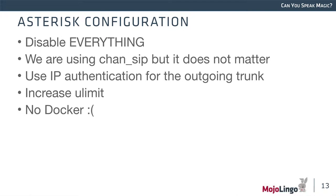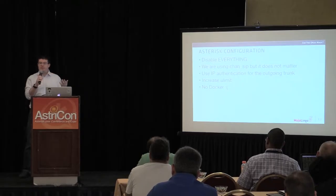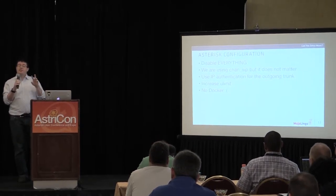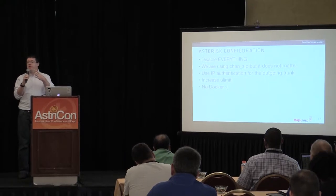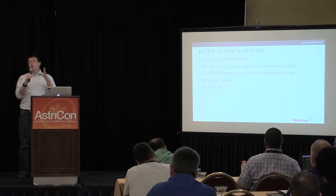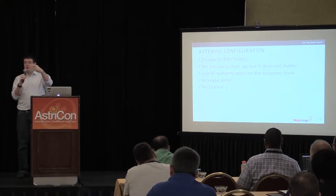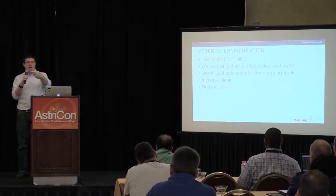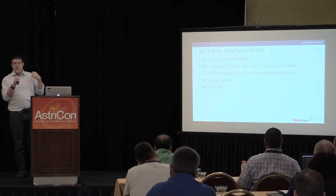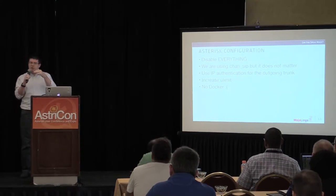Asterisk configuration: in this case we disabled everything — literally only chan_sip, AMI, and things that cannot be disabled, because you don't need anything else for this kind of dialing. I cannot stress enough: look at your modules, look at what you're loading, and see if anything can be removed — small things make a big difference. We use IP authentication for the outgoing trunk instead of registering as a peer, skipping the registration, unauthorized, and re-registration with digest steps. That was one of the biggest performance improvements.